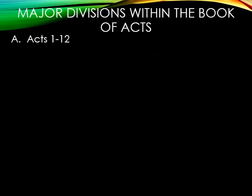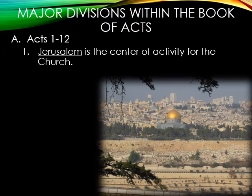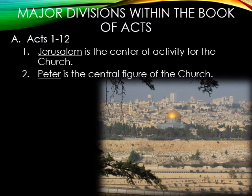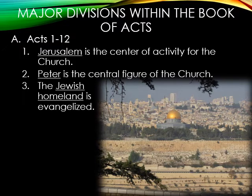Major Divisions Within the Book of Acts: the Book of Acts can be split into two major divisions. The first division is Acts 1–12. Features of Acts 1–12: number one, Jerusalem is the center of activity for the church. Number two, Peter is the central figure — he becomes the spokesperson for the church and is most prominent in Acts 1–12. Number three, the Jewish homeland is evangelized. Jesus said he would give them power from the Holy Spirit to be gospel givers to Jerusalem, Judea, and then the uttermost parts of the world. Peter and the disciples helped start in that Jerusalem Jewish area.